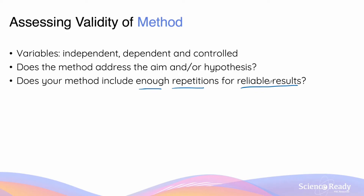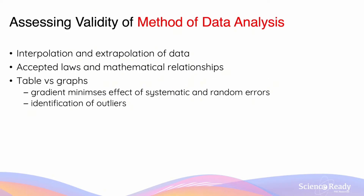Doing the experiment once is insufficient to say the method is valid, because results produced may be subject to chance or luck. In order for a method to produce reliable and valid results, we must repeat the experiment a sufficient number of times. I'll discuss the role of repetition and reliability in its own section later on.